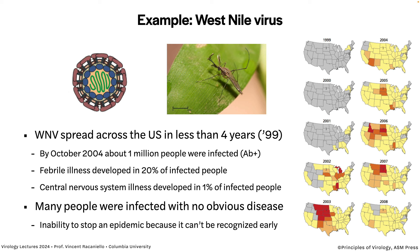By October 2004, about a million people were infected — determined using statistical approximations from blood samples. Febrile illness developed in about 20% of infected people, and about 1% had CNS disease which could manifest as paralysis. So 80% had an inapparent infection. They were infected because they had antibodies — the virus reproduced in them after being injected by a mosquito and made antibodies — but they didn't feel anything.